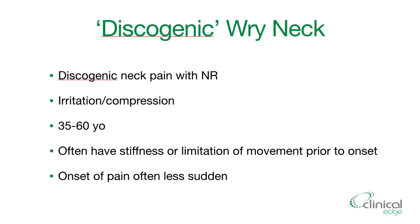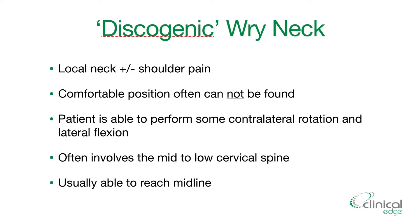So what are the features of discogenic wry neck? We're looking at someone with discogenic neck pain, often with nerve root type symptoms — there's irritation or compression of the nerve or the disc. Age is one of the key features that differentiates it from acute wry neck: this occurs in an older population, typically 35 to 60 year olds. They often have stiffness or limitation of movement prior to onset, and it's a less sudden onset of pain than your acute wry neck.